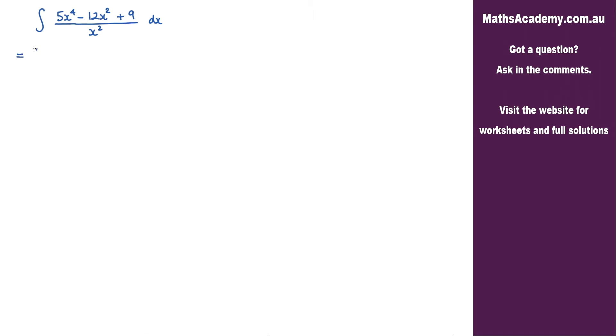So what we're going to have is the integral of, we have got the 5x to the power of 4, that's over x squared. We've got the negative 12x squared over x squared, and we've also got the 9 over x squared, and that's with respect to x.